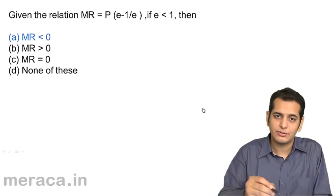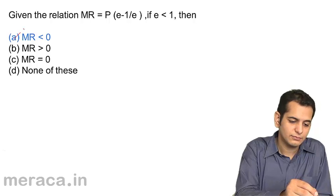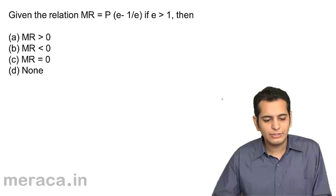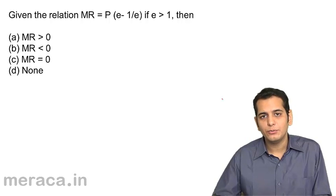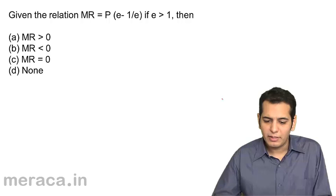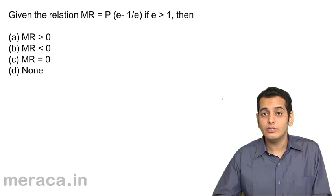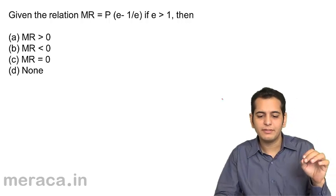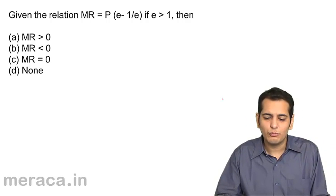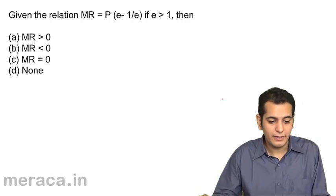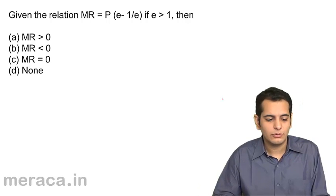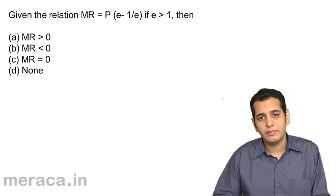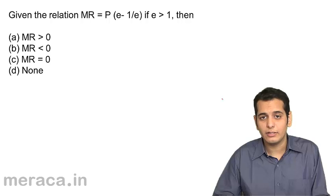Next, given the relation MR equals P into E minus 1 by E, if E is greater than 1. So in this problem, we are given the case where E is greater than 1. So what will be the case? A, MR will be greater than 0; B, MR will be less than 0; C, MR will be equal to 0; or D, none.